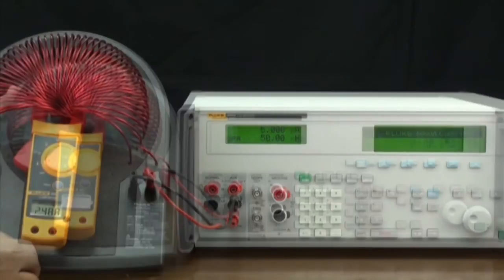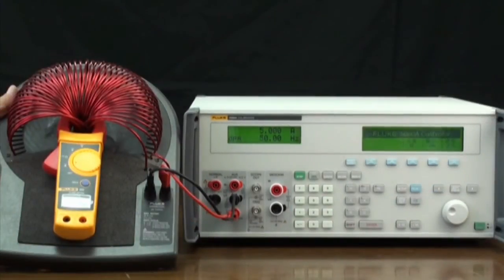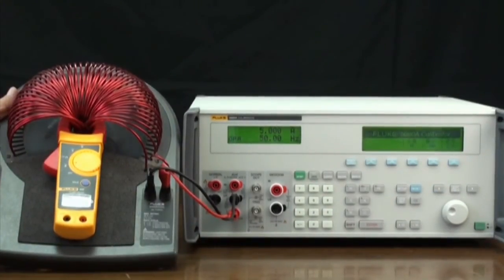Now we can turn the knob to adjust the 5080A's output and make the clamp meter display exactly 250 Amps.